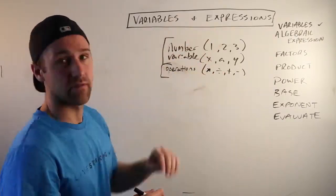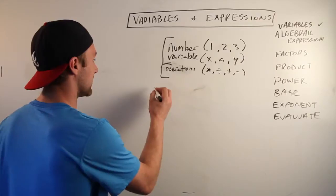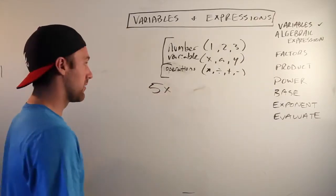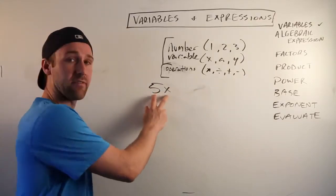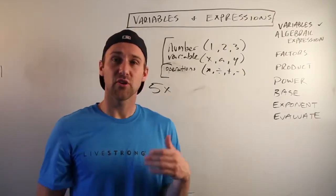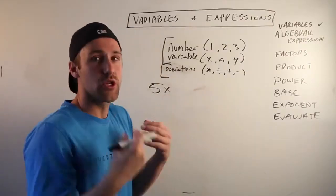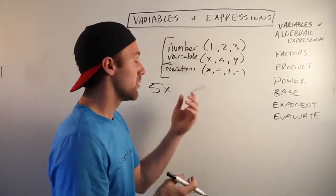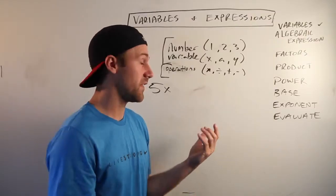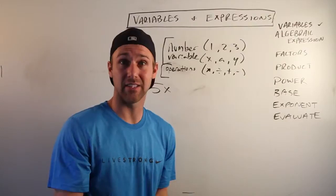So for instance, 5x. That has a number and a variable. Now you're thinking, but there's no expression in there? Well, first off you talk weird, and that's okay with me.